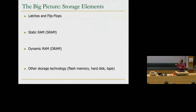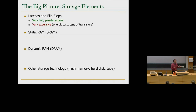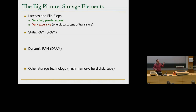There are trade-offs between storage elements. Latches and flip-flops are very fast, parallel access, built in CMOS, but very expensive — one bit costs tens of transistors. A cross-coupled inverter costs four transistors (since an inverter costs two transistors). Static RAM is relatively fast and costs about six transistors per bit, though variants for robustness may use eight.